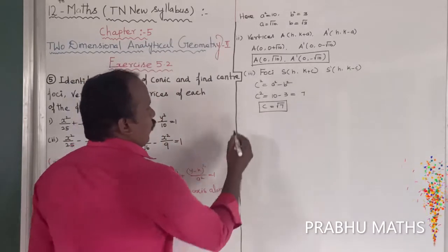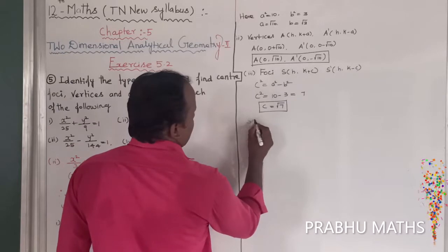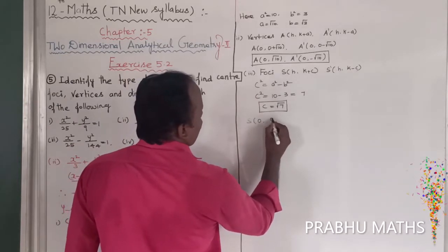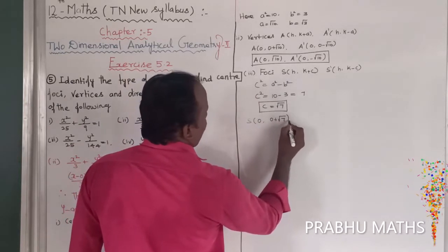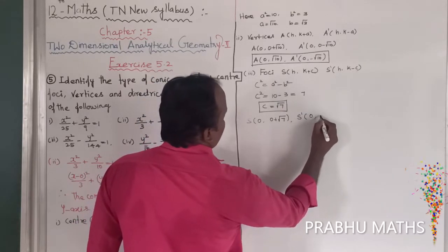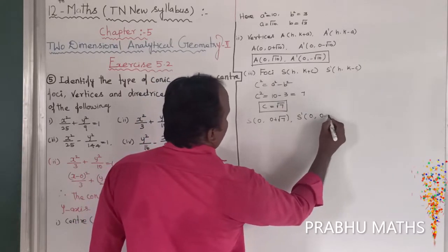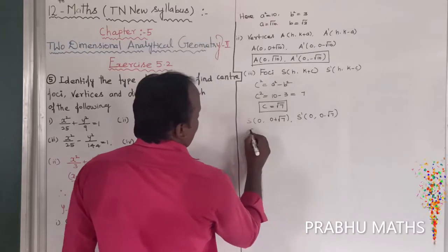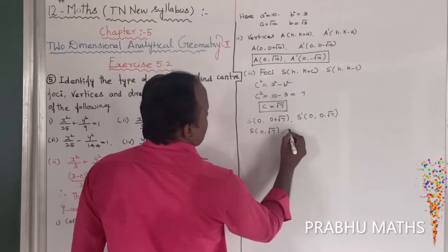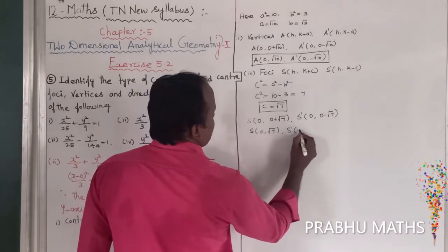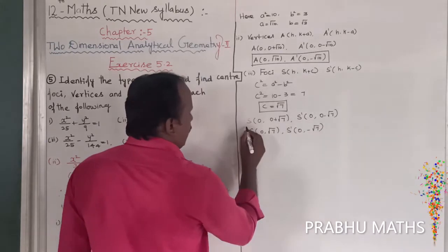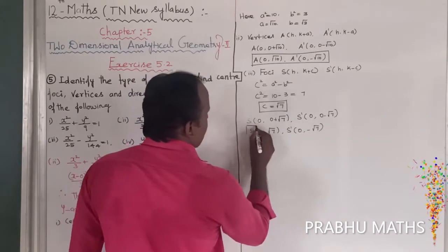The foci are: S is (h, k + c) = (0, 0 + √7) = (0, √7), and S' is (0, 0 - √7) = (0, -√7). The foci are now determined.